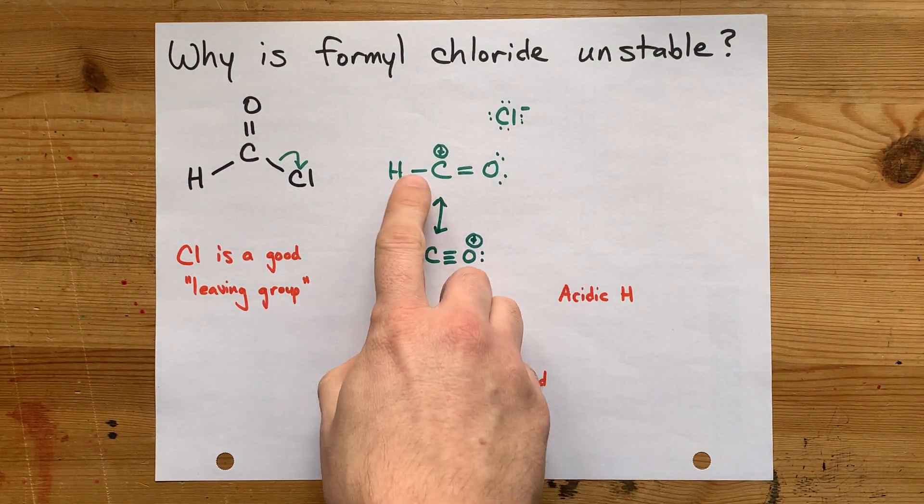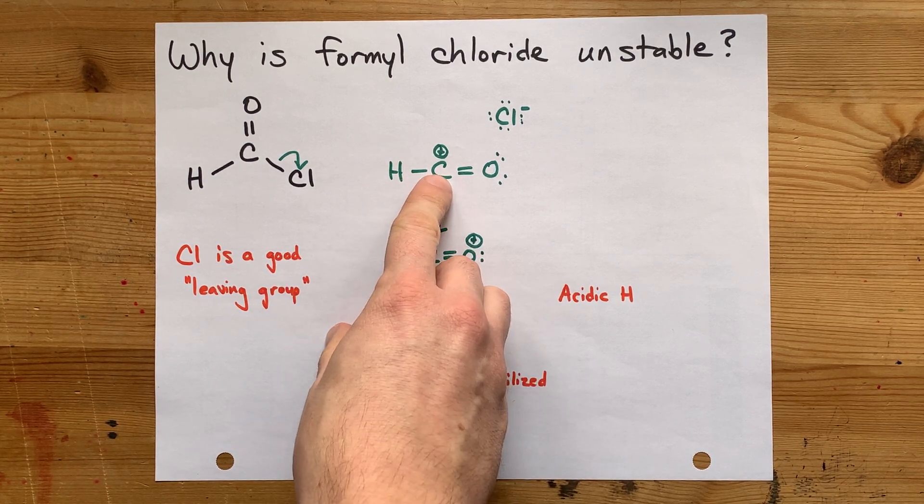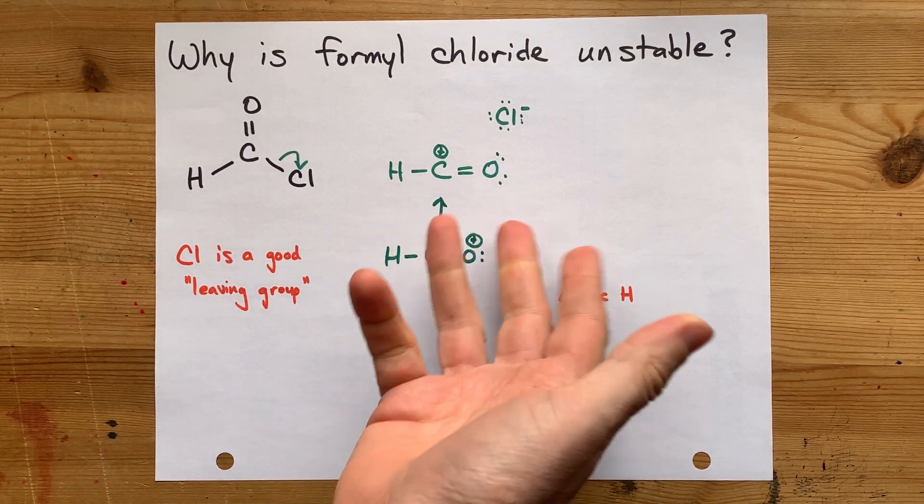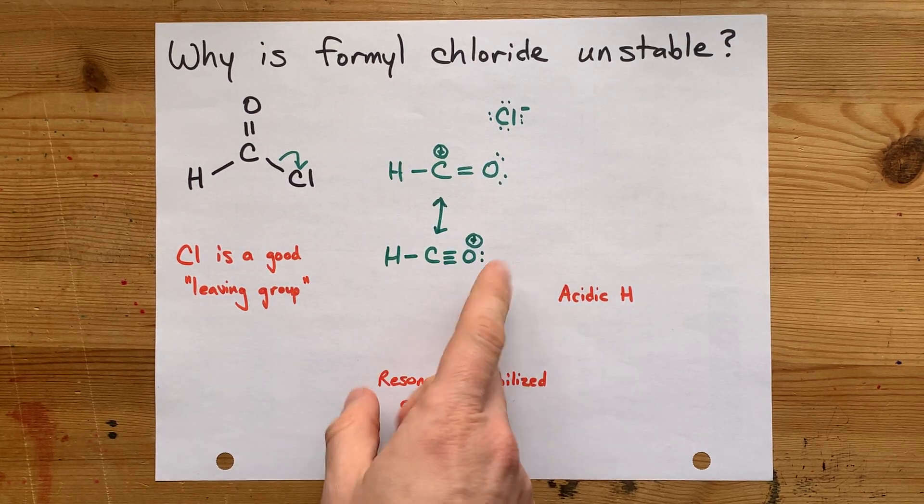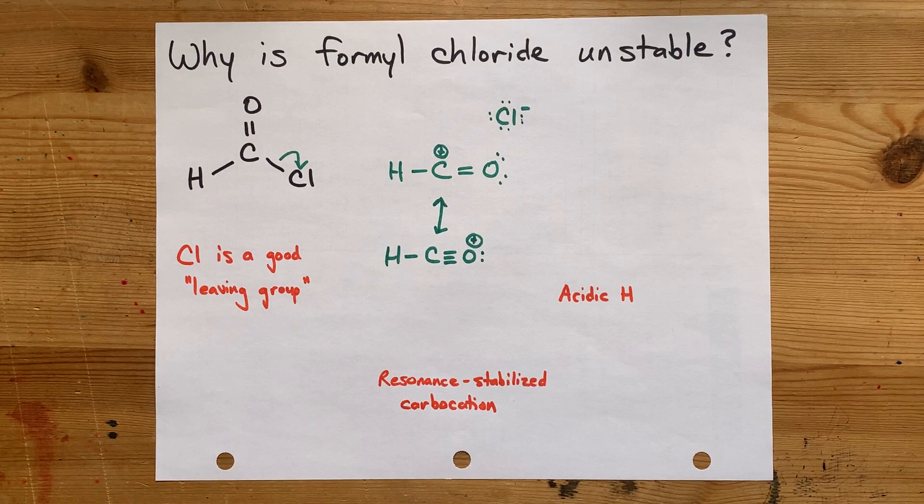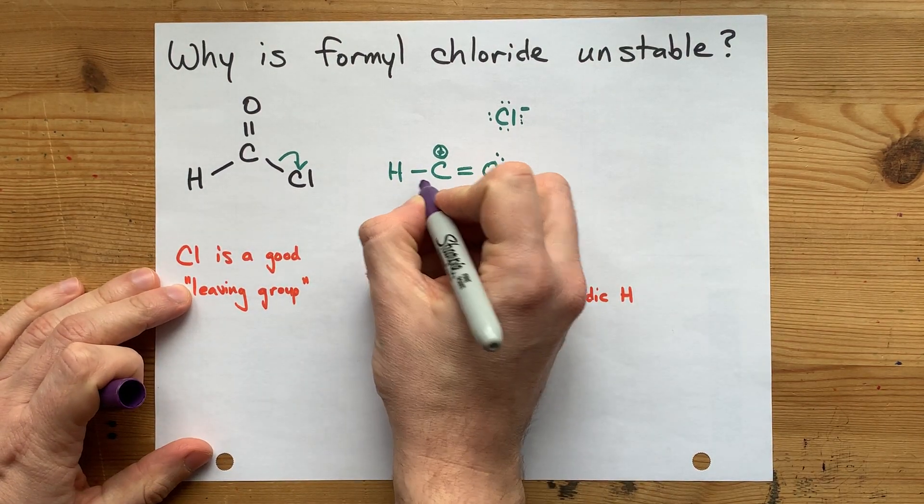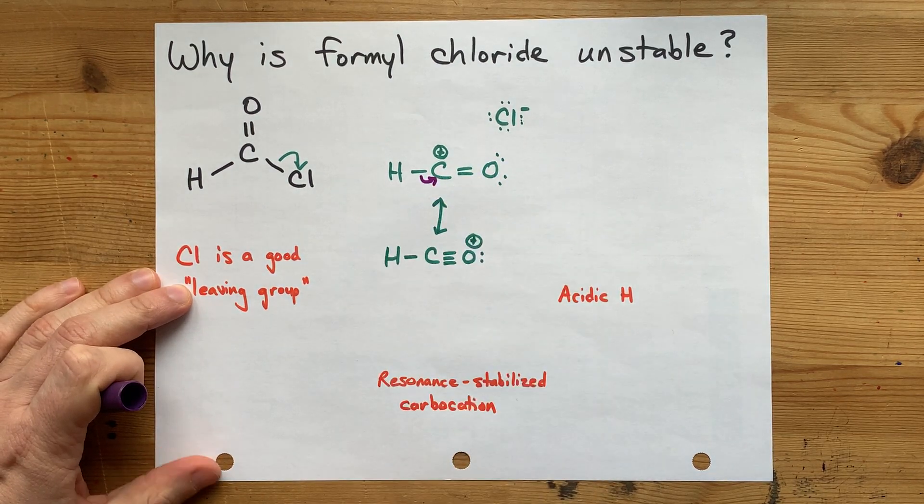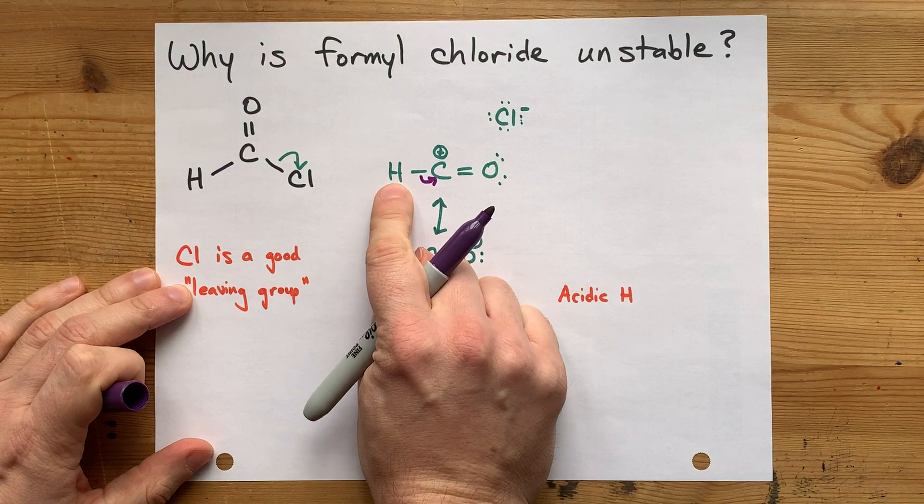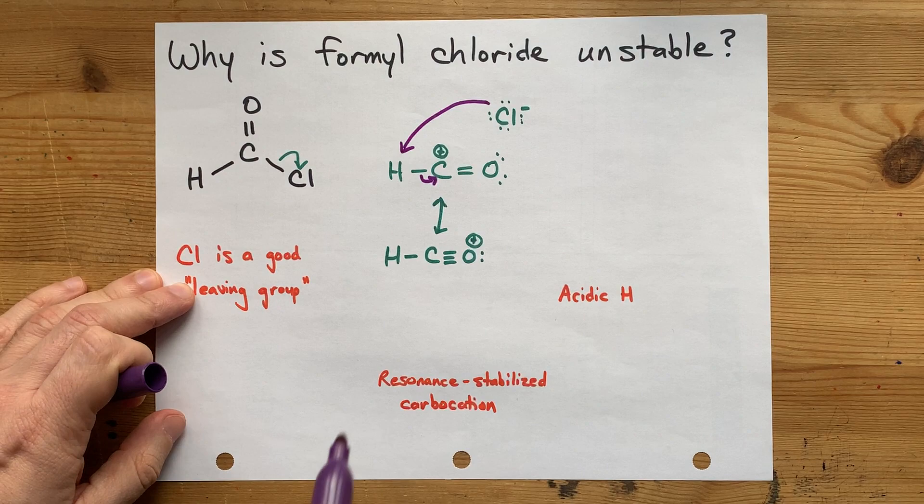But more importantly, this H which is not connected to that carbon, the carbocation's carbon, in a longer chain acid chloride, is itself acidic. From here you can consider that the carbon might want to take those electrons for itself. Where is that H+ ion going to go? Well, you can consider it to be paired with the chloride.